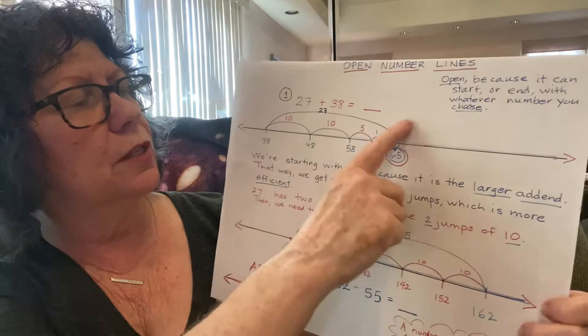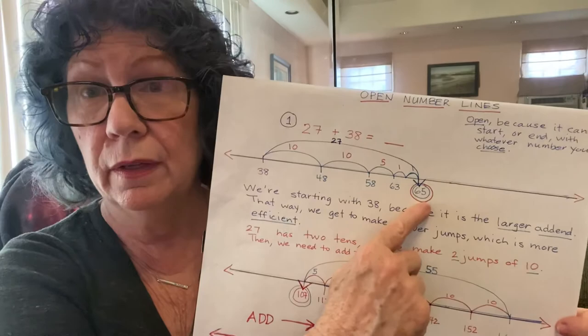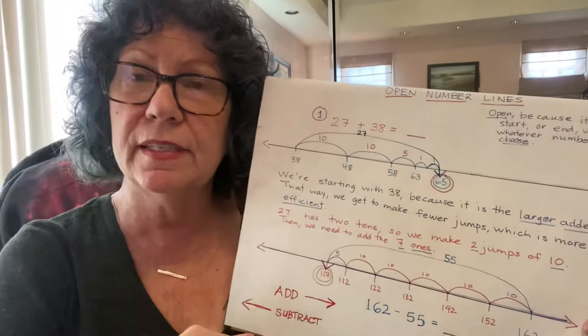27 plus 38. Now, there's nothing wrong with starting with 27 and jumping 38. Sometimes students will do that when I tell them to check their work. But we know about the commutative property that these addends can switch places and the sum will always still be the same. So that's a short review and tutorial on open number lines.